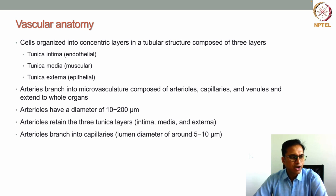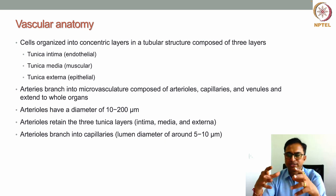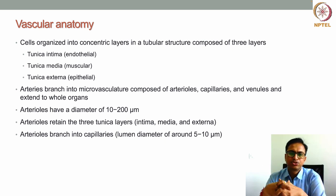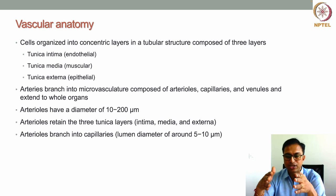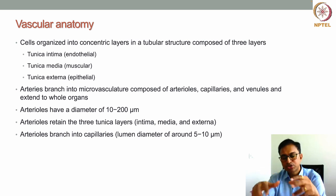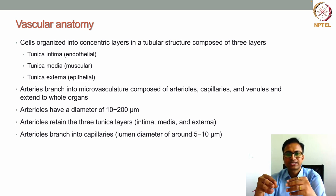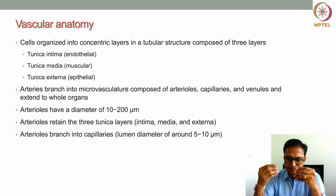From the heart, the aorta is generated and branches into arteries, which then branch further into microvasculature. When arteries reach the tissue bed or organ bed, they form different types of small micro-structures like arterioles, capillaries, and venules, and these small structures extend the blood supply throughout the whole organ.